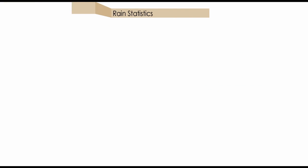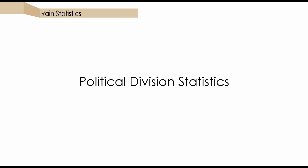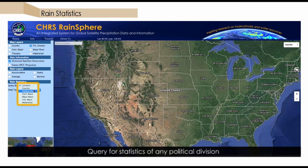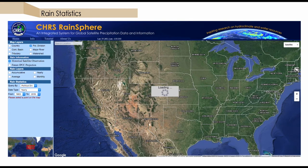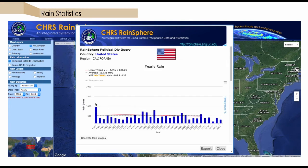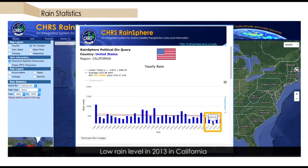We can perform a similar analysis for a political division query. For an example, let's look at a complete historical period for the state of California. In this case, California shows no significant annual precipitation trend. What we can see very quickly is how dry the year 2013 is — in fact, it had less than half the average annual rainfall for the state.